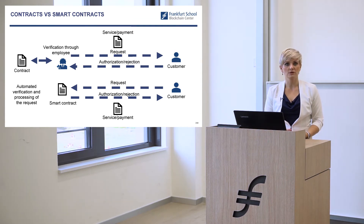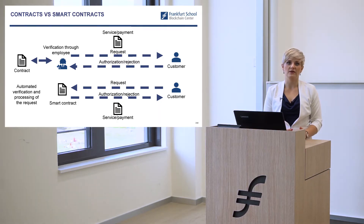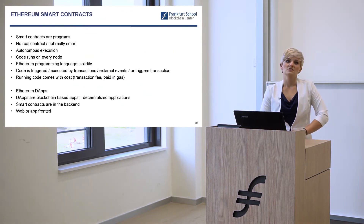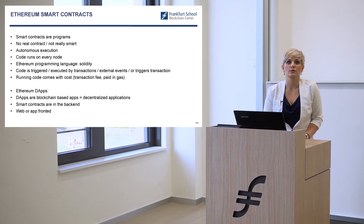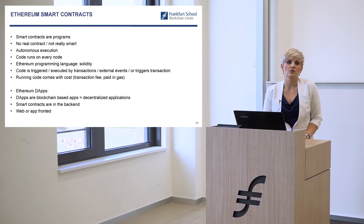With smart contracts, that's not the case because they're automated. Something is written in the computer program, and when a request comes in, it's either authorized or rejected by the smart contract. Both parties don't have to do anything. Someone uses the service, they have to pay for it, and the smart contract will enforce it — there is no way around it. In Ethereum, smart contracts are programs; they're not really 'smart,' just useful because the execution is autonomous.